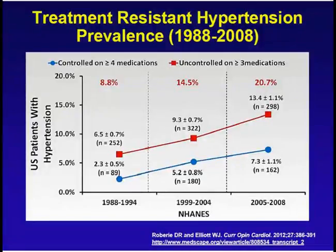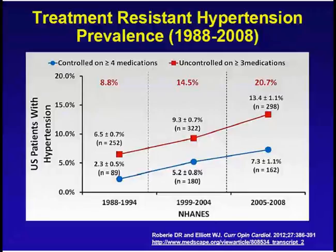What is the prevalence of this particular disease? If you use these two definitions, at least in the USA, the prevalence is going up. This is the NHANES data from 1988 to 2008, and initially it was 6.5% reported; now it is 13.4%, clearly showing an increase in treatment-resistant hypertension using both these definitions.